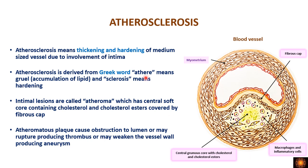What exactly is atherosclerosis? It means thickening and hardening of the vessels, usually occurring in medium-sized vessels. The word atherosclerosis is derived from Greek: 'ather' means gruel or soft, because of the accumulation of lipids, and 'sclerosis' means hardening. In atherosclerosis, we have a lesion called an atheroma, which has a central accumulation of a soft lipid core with a firm fibrous cap on it.